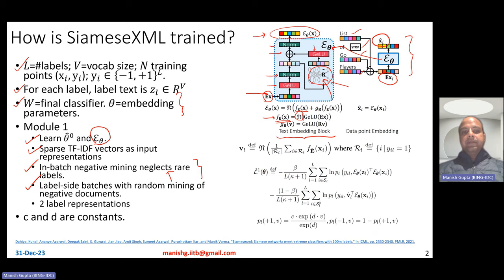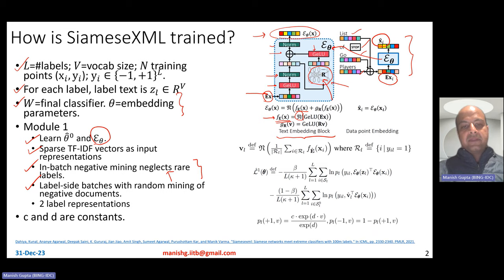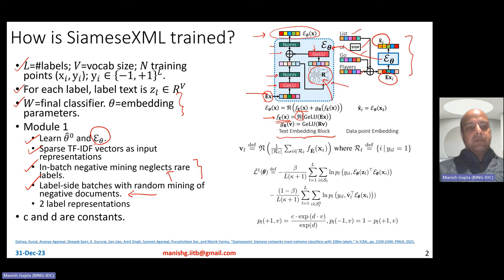Therefore, Siamese XML introduces a very interesting concept called label-side batching. They form batches out of labels, meaning a single batch typically contains one label or a few labels. You then randomly mine the negative documents. If there's only one label in the entire batch, all you can do is mine random documents as negatives. This does not neglect any real labels because several examples of the same label are already present in the same batch.